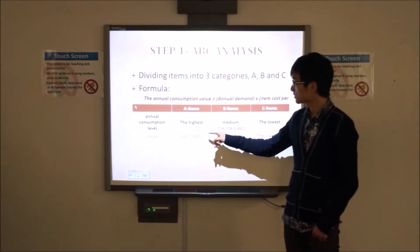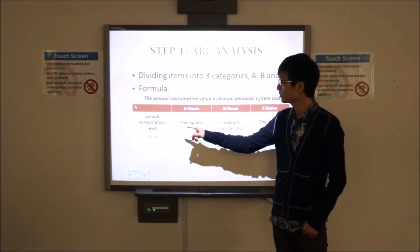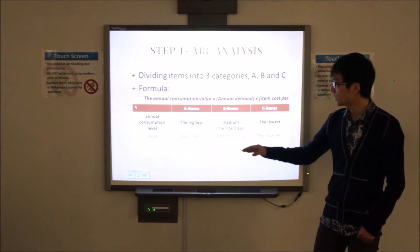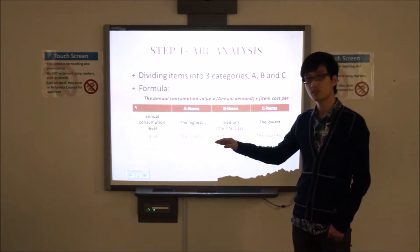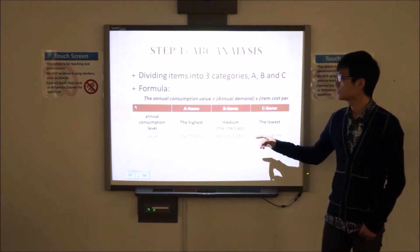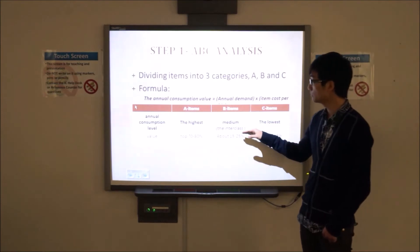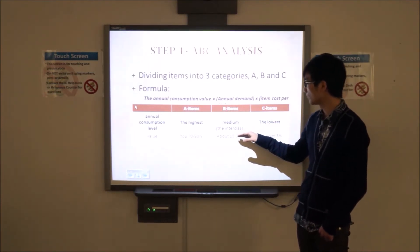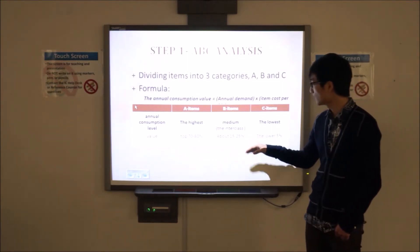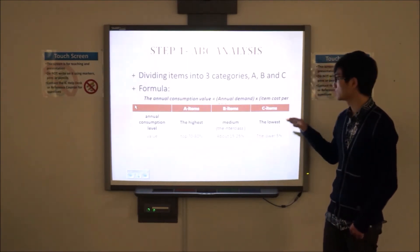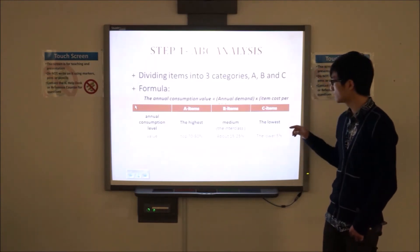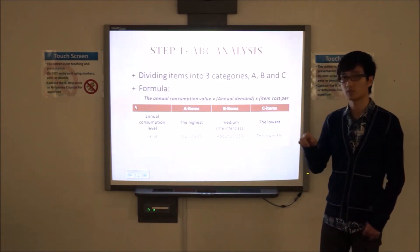A items has the highest annual consumption level, and its value is about 70 to 80 percent. B items has a medium annual consumption level, and the value is about 50 to 25 percent, while C items has a lowest annual consumption level, and the value is also the lowest, about 25 percent.